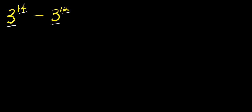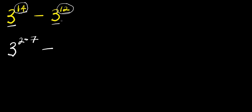The first step is to express 14 as a product of 2 and 7, and 12 as a product of 2 and 6. So we have three to the power of two times seven, minus three to the power of two times six.